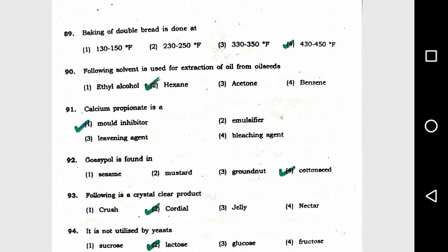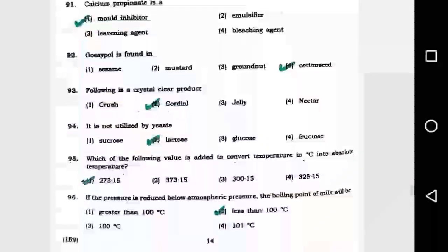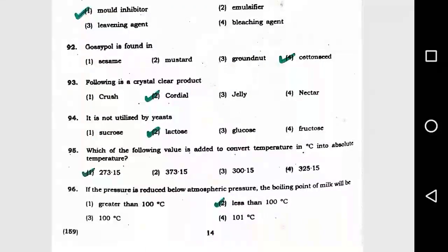Question number 90: The following solvent is used for extraction of oil from oil seeds: option 2, hexane. Question number 91: Calcium propionate is option 1, a mold inhibitor. Question number 92: Gossypol is found in option 4, cotton seeds.